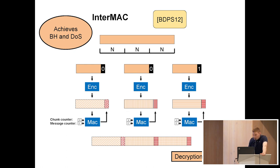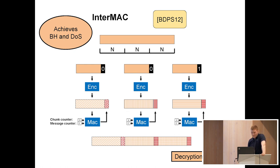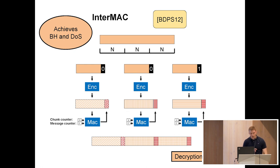To answer these questions, we're going to start by looking at a scheme called InterMAC. This scheme is pretty simple. Given a message, you first split it into equal-sized chunks of length n, counting in bytes — this n you call the chunk length. You then encode each chunk with a byte 0, except the last chunk, which you encode with a byte 1.